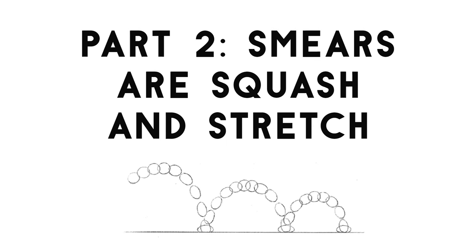Part two is smears. You've probably seen on Twitter somebody post a picture of Homer Simpson turning and Homer has like ten eyes, and they go 'look at this bad drawing' — they're just baiting you with it. And that's what smears are. They're animation smears, and they're not bad — they're an animation trick. The thing is, smears are not stretches.